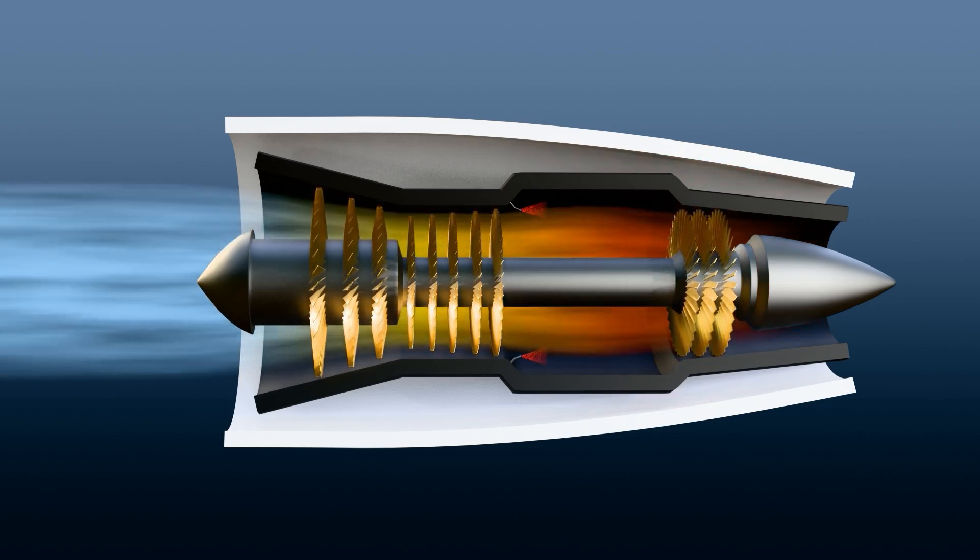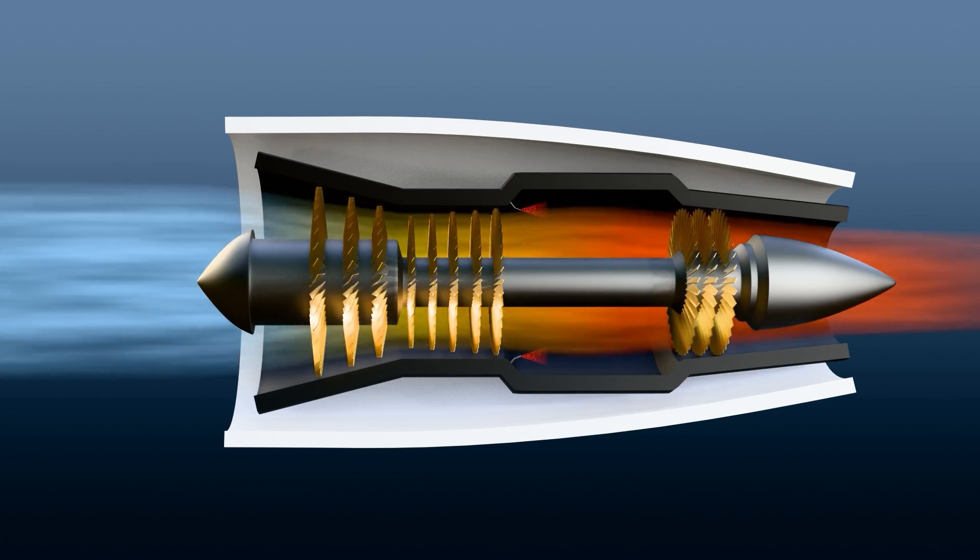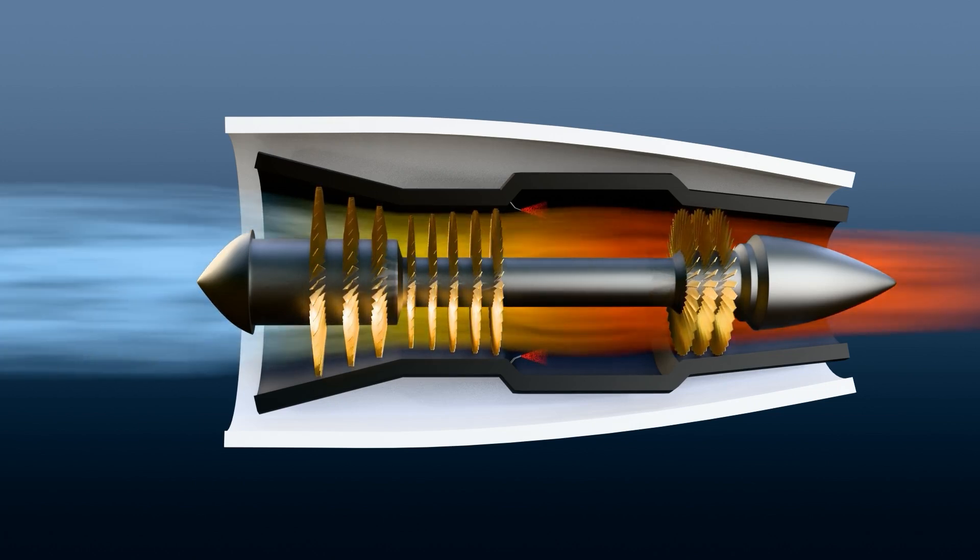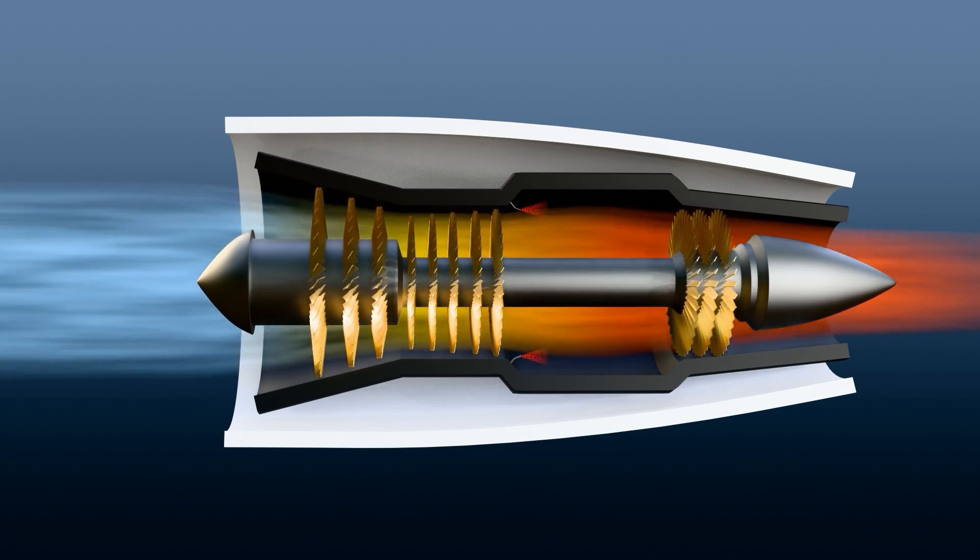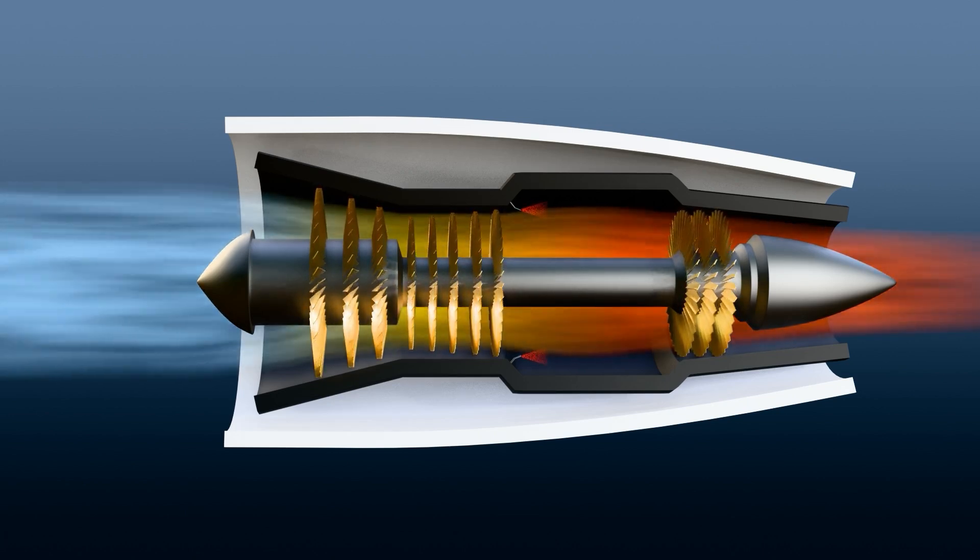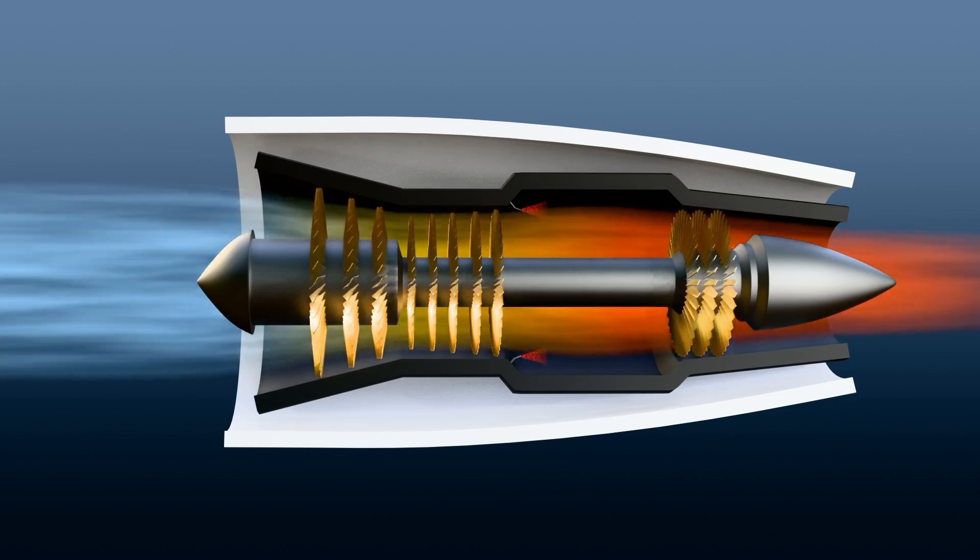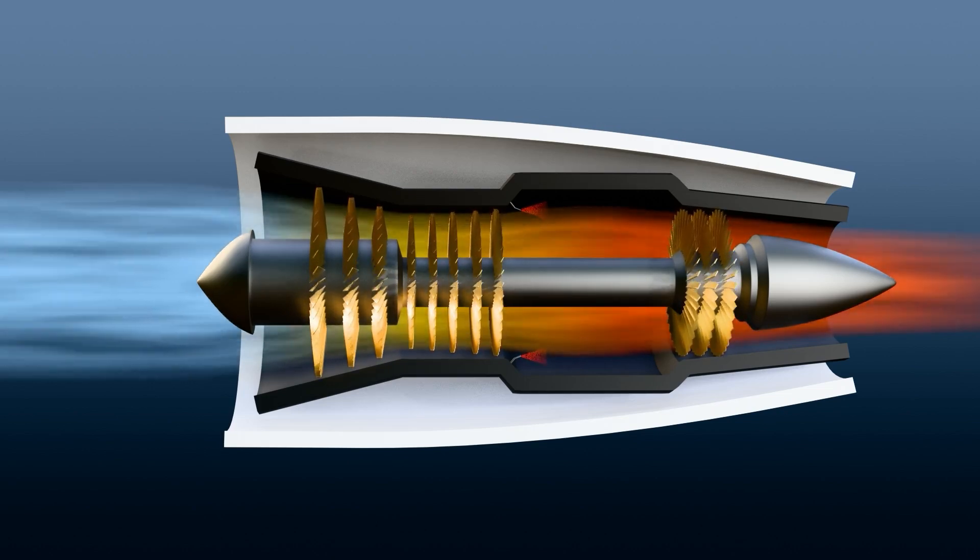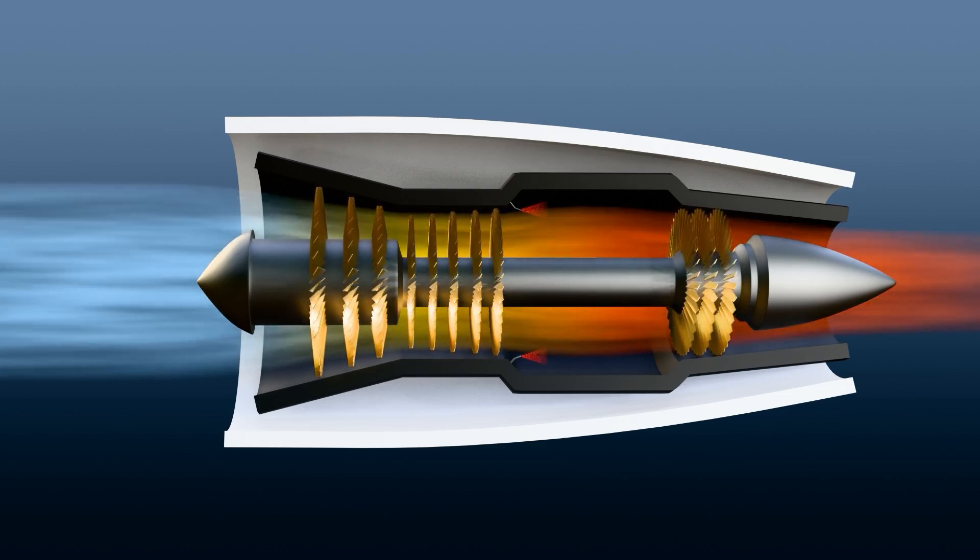Finally, the gases exit the engine at high speed. This fast flow generates thrust, pushing the aircraft forward. Turbojets excel in high-speed applications, such as fighter jets and supersonic aircraft, where raw speed is crucial. However, they are less fuel efficient and noisier at lower speeds, limiting their use in commercial aviation.